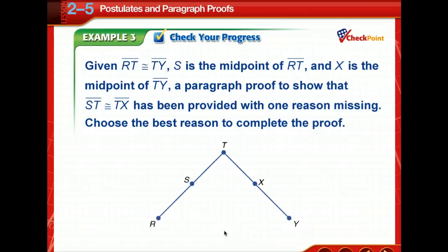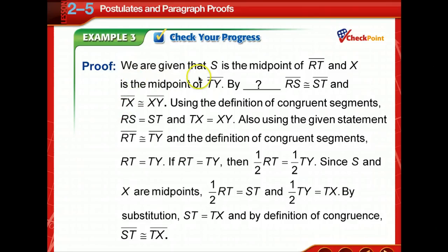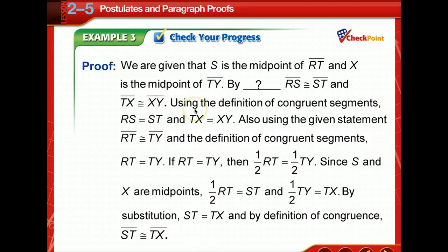Let's check your progress. The diagram is already drawn for you. We're told that RT is congruent to TY, S is the midpoint of RT, and X is the midpoint of TY. We need to write a paragraph proof to show that ST is congruent to TX. They'll give you the proof with one reason missing, and you need to choose the best reason to complete it. Pause to draw the diagram, write down your given, and then we can go on to the paragraph proof.